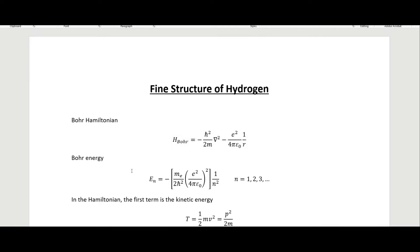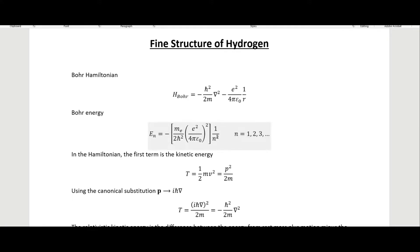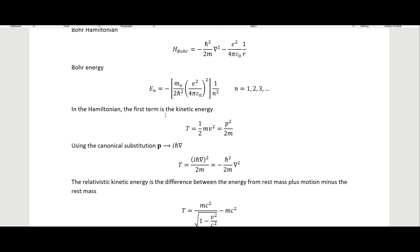Our Bohr energy is this right here, which we found in a previous video. If we are in the ground state it equals minus 13.6 electron volts. In the Hamiltonian the first term is the kinetic energy — kinetic energy is one half mv squared, but since mv equals the momentum we can square this m and divide by m to get p squared over 2m.